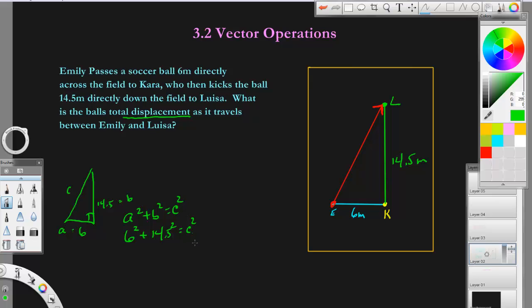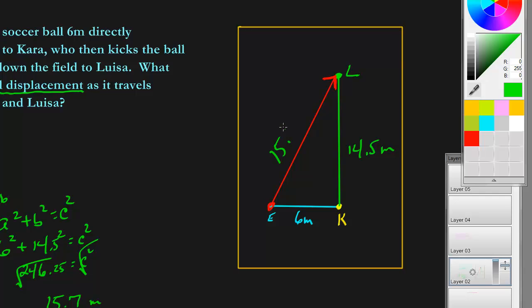So this side on the right becomes two hundred and forty six point two five and then you square root both sides. And so the square root of that is about fifteen point seven, and that's rounded and that would be meters. So this is fifteen point seven meters right there. That's the magnitude of the displacement.